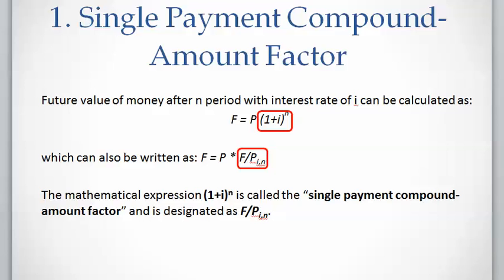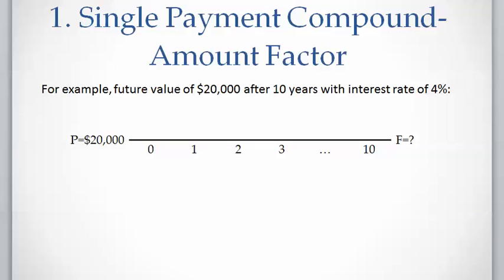Note that n here is the number of periods, the time interval between present time and future, the time difference between present time and future. For example, if a problem asks you to calculate the future value of $20,000 after 10 years with interest rate of 4%...